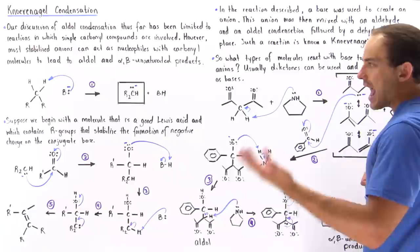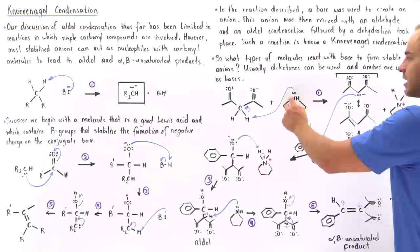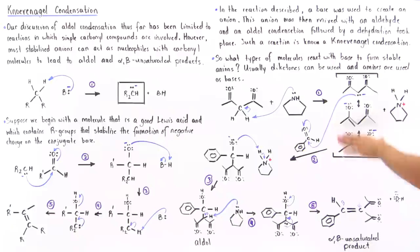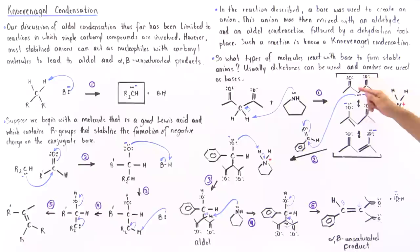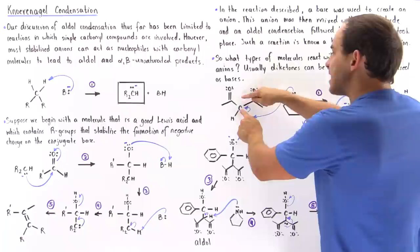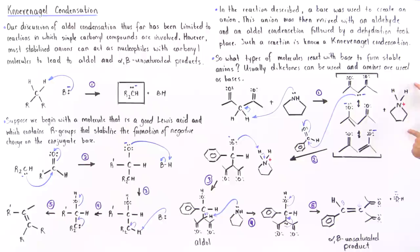Let's suppose we use the following amine. The lone pair of electrons on the nitrogen takes away our alpha H atom to form this resonance-stabilized structure. Notice that these two R groups actually do play a role in stabilizing the negative charge by delocalizing that negative charge among these two other electronegative oxygen atoms. So we have resonance stabilization as a result of the R groups attached to this alpha carbon. We also form the conjugate acid to this amine base.